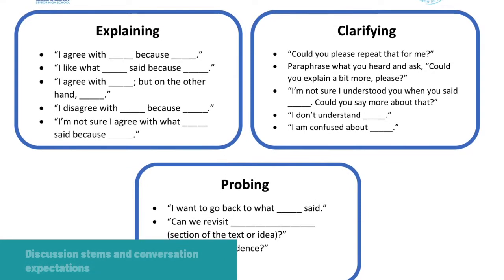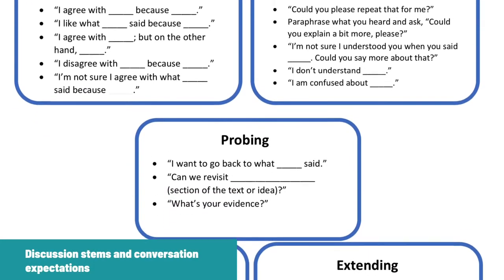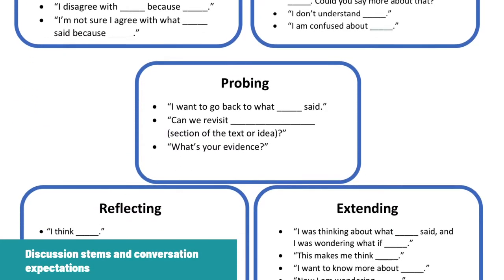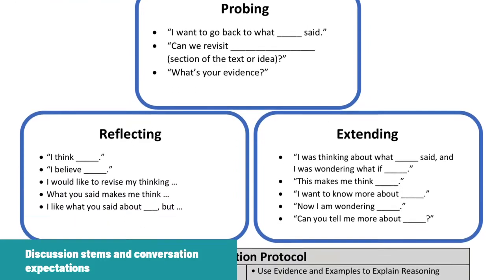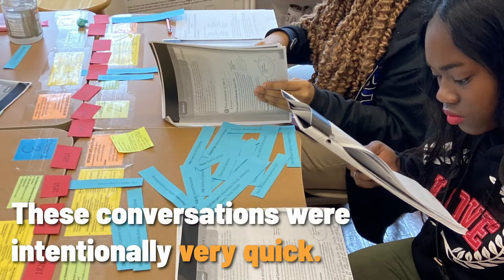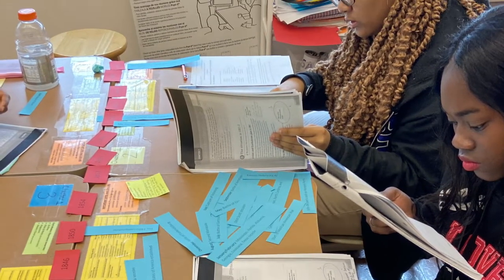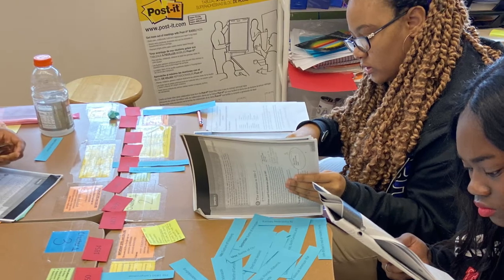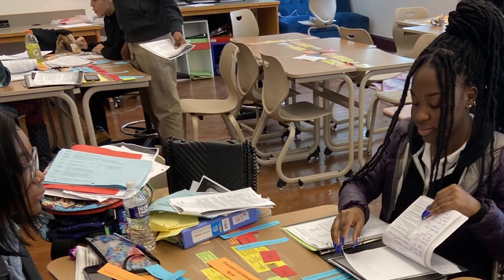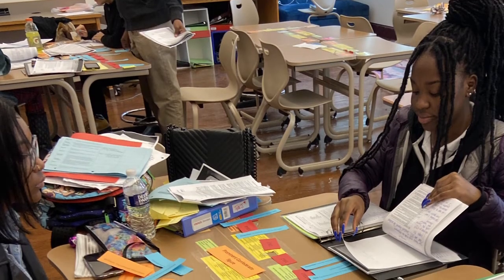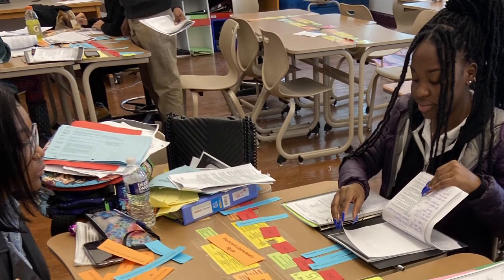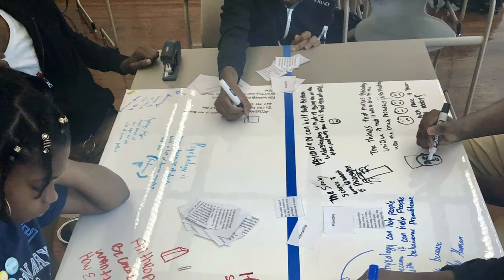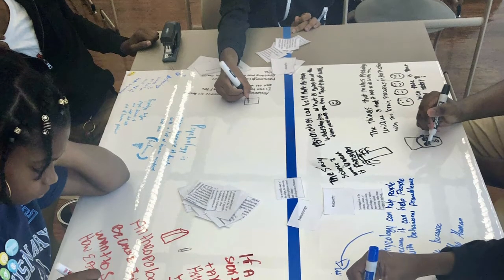I also included a laminated sheet of expectations that my school was using across all disciplines for student conversation. These conversations were intentionally very quick. I wanted to be in and out around five minutes so students would still have a good chunk of work time in our self-paced classroom.